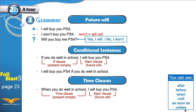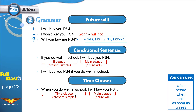I can use 'unless.' I will not buy you PlayStation 4 unless you do well in school. It gives the same meaning, but instead of using a positive main clause, I used a negative main clause. I will not buy you PlayStation 4 unless you do well in school — that means you need to do well in school for me to get you PlayStation 4.